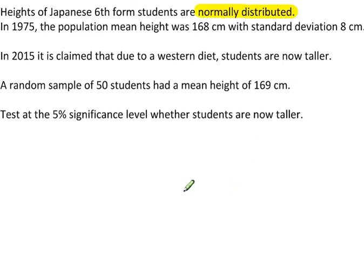In 1975, the population mean height was 168 cm, so this is the current population mean, with standard deviation 8.